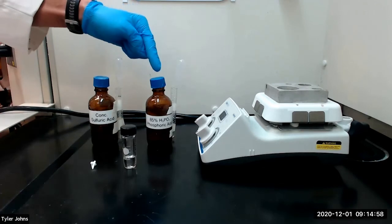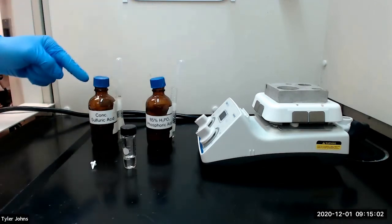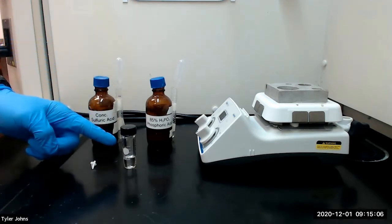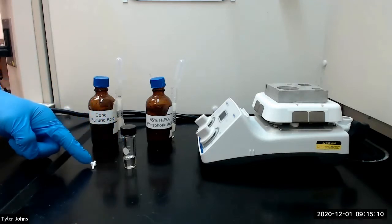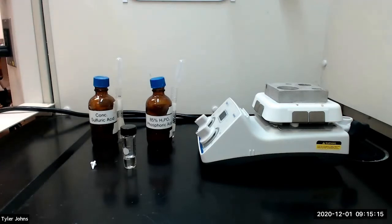We will next add 0.4 milliliters of 85% phosphoric acid and 6 drops of concentrated sulfuric acid to the conical vial with our 4-methyl cyclohexanol. We will then add a spin vane and stir the liquids on a magnetic hot plate. After mixing, we will connect our conical vial to the distillation apparatus.